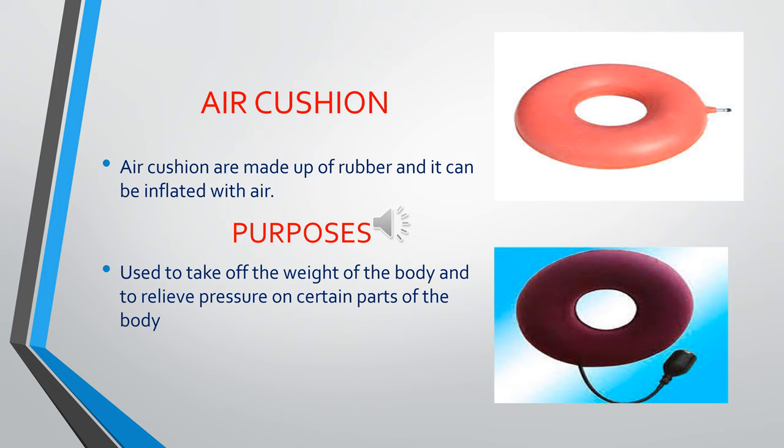The next comfort device is the air cushion. As the name indicates, these are ring-like structures filled with or inflated with air. They are basically made of rubber and their main purpose is to take off the weight of the body and to relieve pressure on certain parts of the body, such as knee joints, heels, and most commonly to support the head.